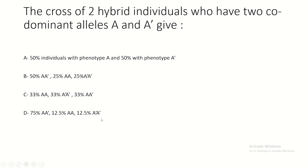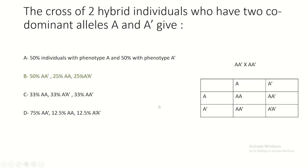The cross of two hybrid individuals who have two codominant alleles A and A' would give: 50% A A', 25% A A, and 25% A' A'.